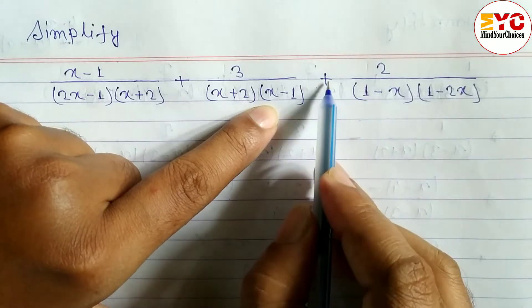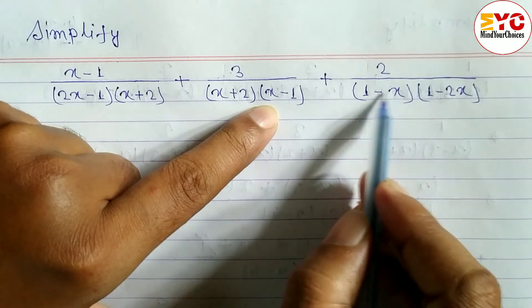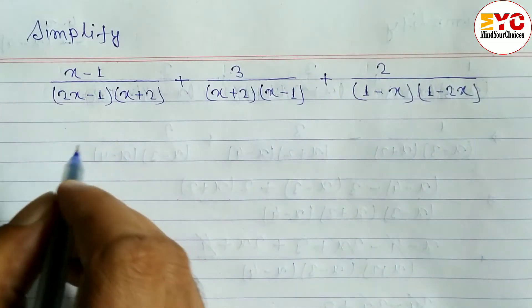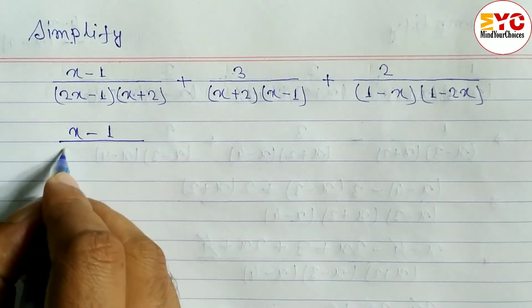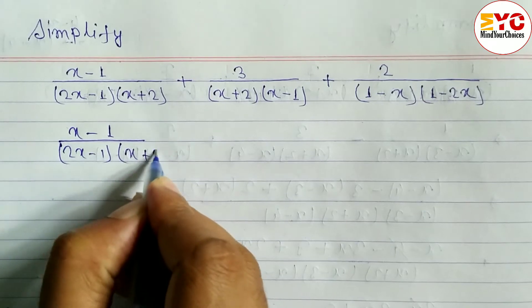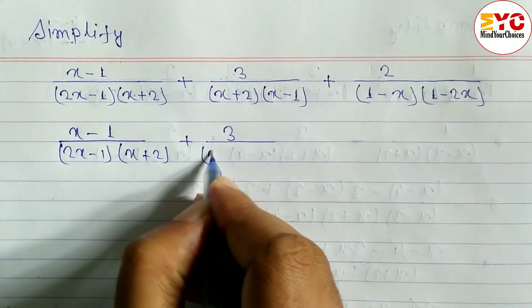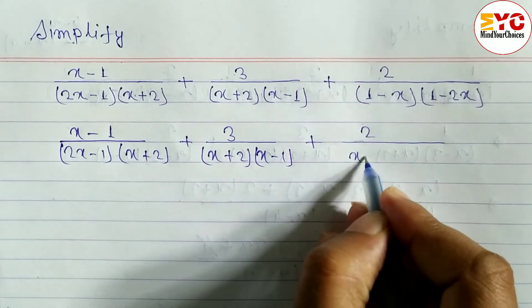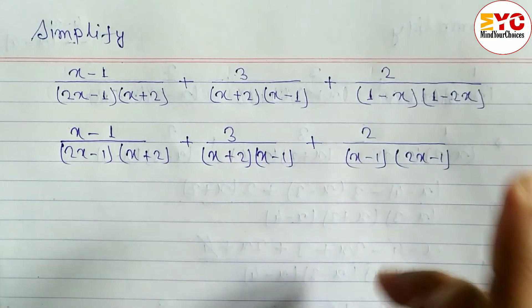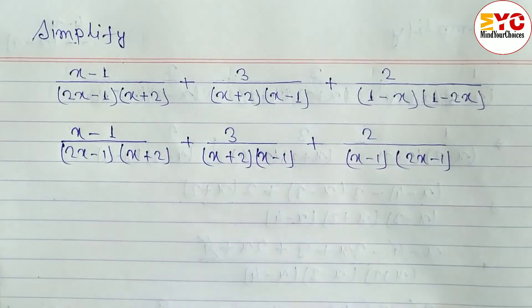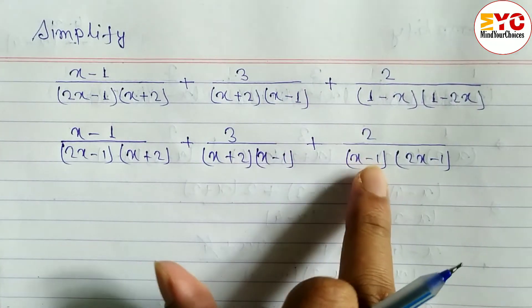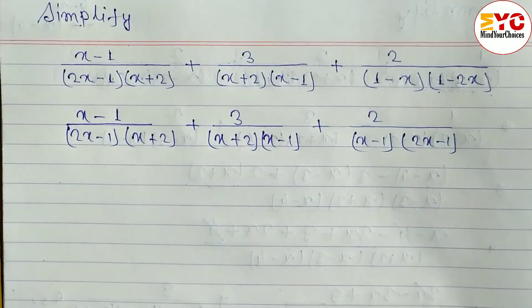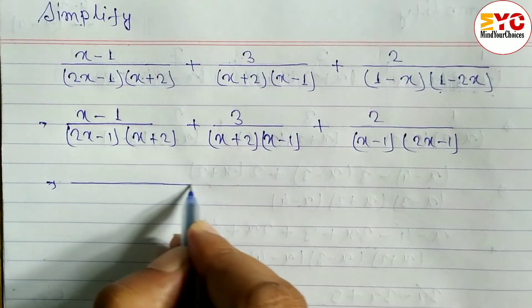If only one factor is changed you must change the positive sign to negative. If both factors are changed — taking minus common from both — then minus times minus is plus, so the sign stays plus. We rewrite the expression: (x minus 1) over (2x minus 1)(x plus 2), plus 3 over (x plus 2)(x minus 1), plus 2 over (x minus 1)(2x minus 1).